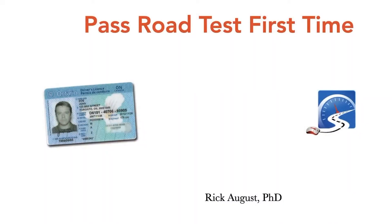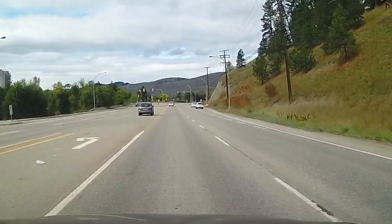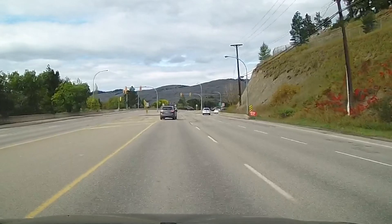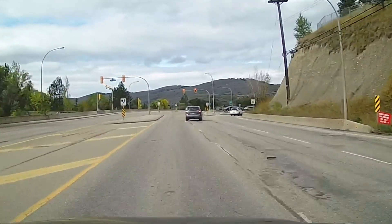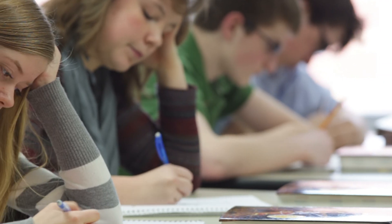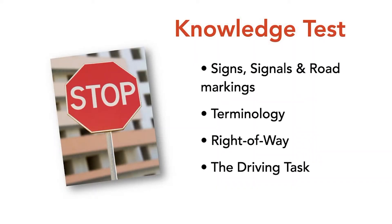Pass your driver's test first time — that's what we're talking about tonight. First thing you need to do is get a learner's test. Most places have the GDL or GLP, the Graduated Licensing Program, called GLP in Ontario and other parts of Canada, and GDL in the States. You have to write a knowledge test consisting of 50 multiple choice questions, of which you have to get 80% — so 40 of the 50 correct — to pass.